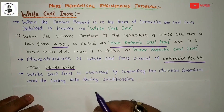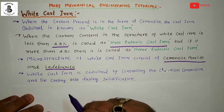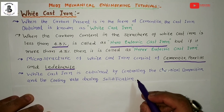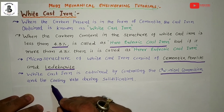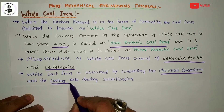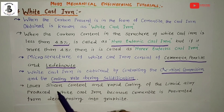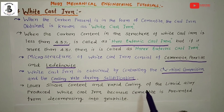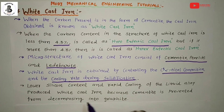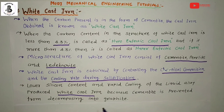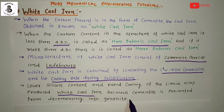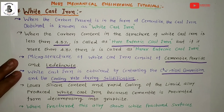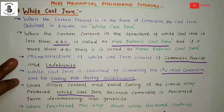The key question is how we obtain white cast iron. White cast iron is obtained by controlling the chemical composition and, most importantly, the cooling rate during the solidification process. Lower silicon content and rapid cooling of the liquid alloy produce white cast iron because cementite is prevented from decomposing into graphite. It has a white appearance on the cross-sectional area, and when fractured, this alloy shows white fractured surfaces.